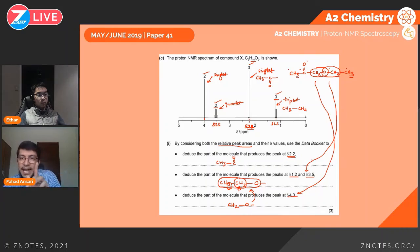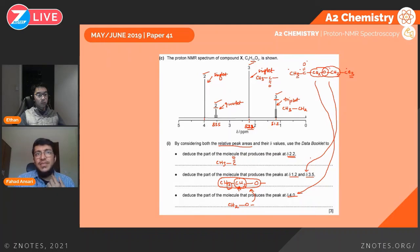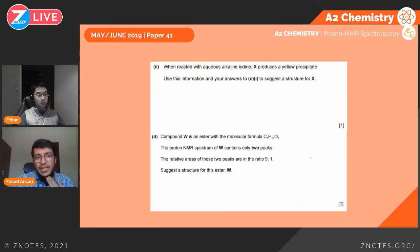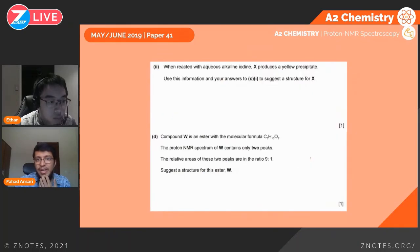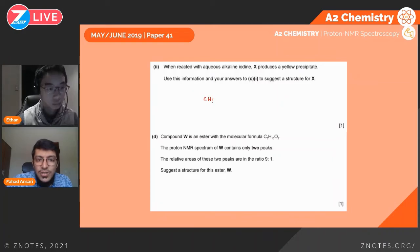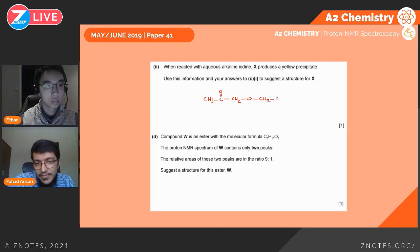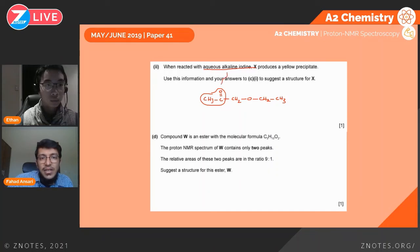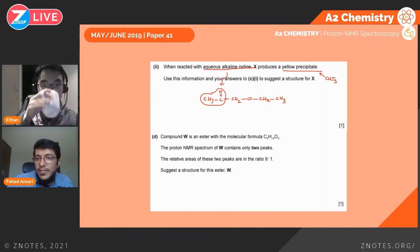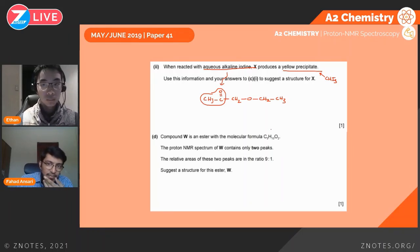Putting the puzzle pieces together gives the structure: CH3C=O–CH2–O–CH2CH3. Other chemical tests can confirm the structure — when compound X reacts with alkaline aqueous iodine, it produces a yellow precipitate of triodomethane (iodoform), confirming the CH3C=O group is present. This confirms that the structure deduced from the NMR spectrum is correct.